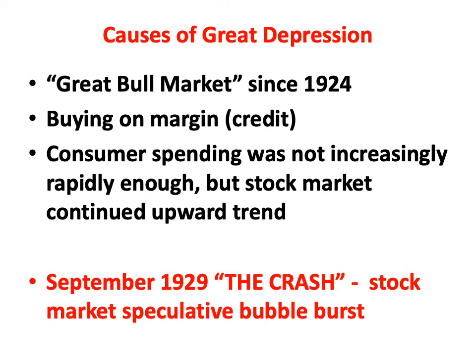People were using credit to buy stocks — this is called buying on the margin. Let's assume a share of a company costs $10; the person may only have $1, but a bank would lend them $9. Everybody assumed that stock valued at $10 would be worth $15 the next year. If they sold for $15, they could pay back the $9 and make a nice profit. That's buying on the margin — leveraging through loans — which many felt was fine because they believed this bull market would last forever.